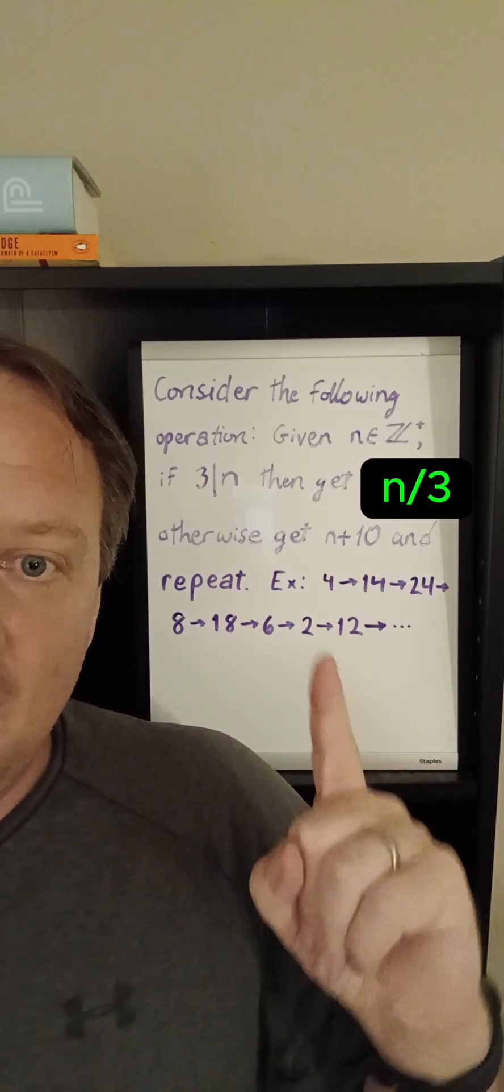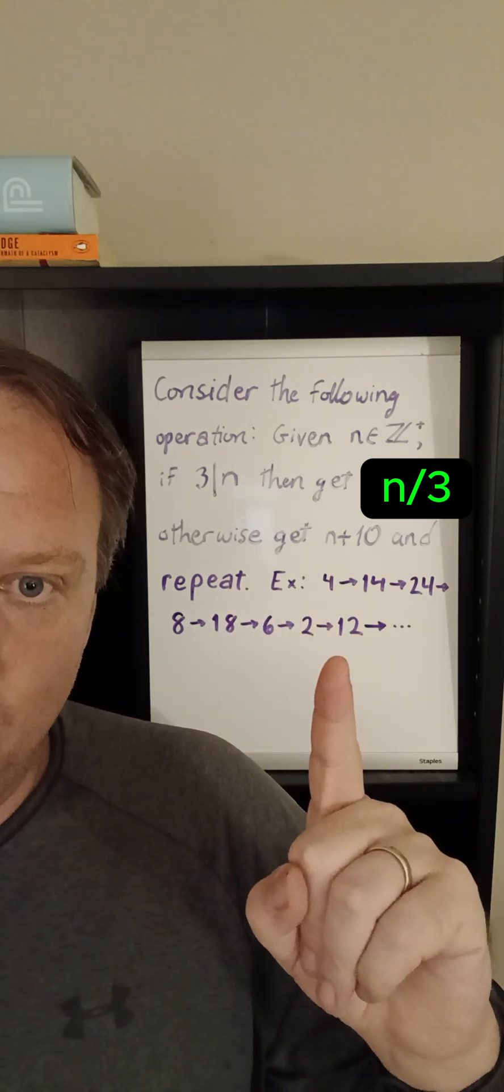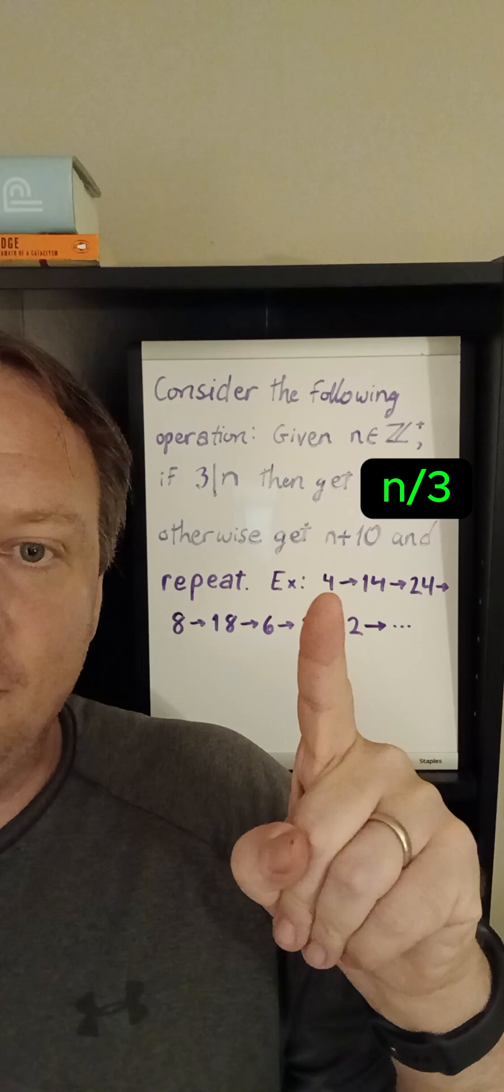But that doesn't, and at this point you can see that we're kind of in a cycle because the next number is divisible by 3, and we're going to get back to 4.